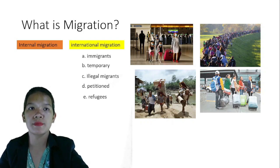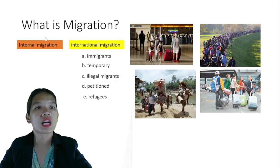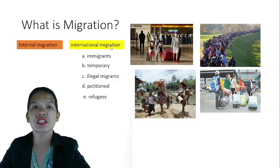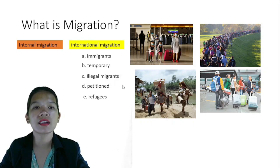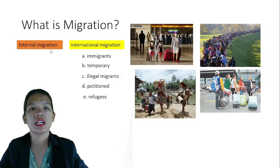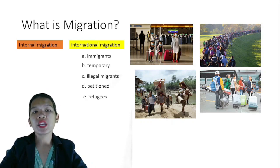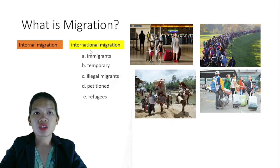Migration has two types: internal migration and international migration. Internal migration refers to people moving from one area to another but within one country only. International migration, on the other hand, is when people cross the border of one country to another. International migration can be further broken down into five categories: immigrants, temporary immigrants, illegal migrants, petition migrants, and refugees.